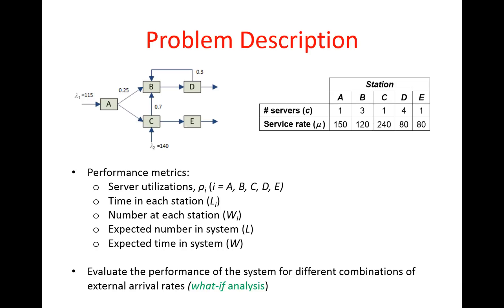We would also like to use Excel to perform what-if analysis to evaluate system performance for different combinations of external arrival rates. In this model we have two external sources: lambda 1 and lambda 2. We want to see how the system behaves under different values of these arrival rates.